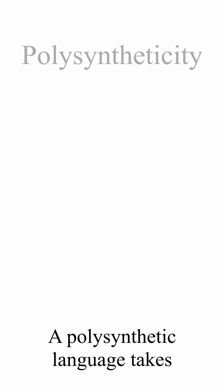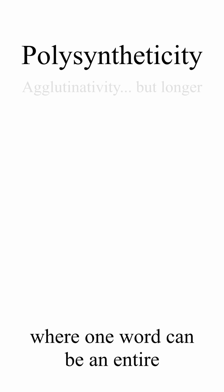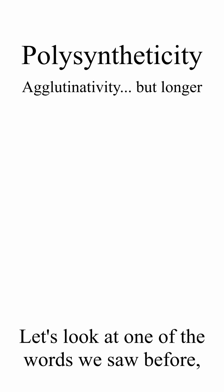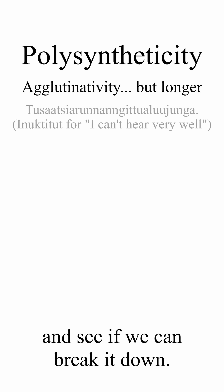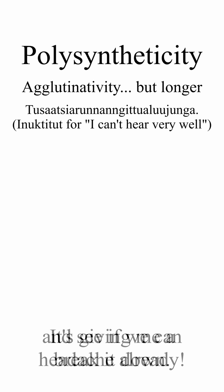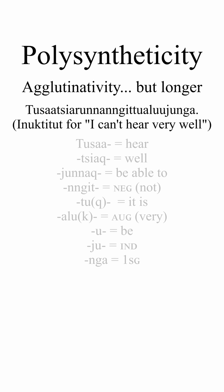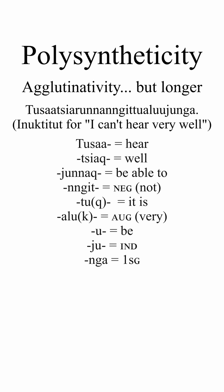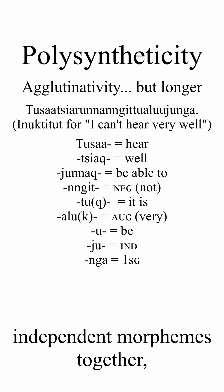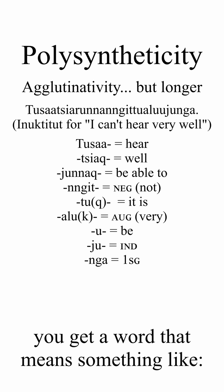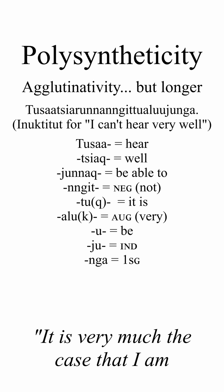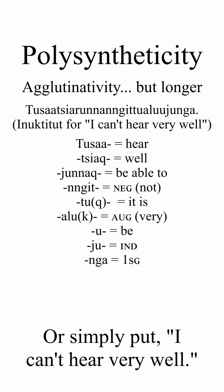A polysynthetic language takes agglutinativity to a whole new level, where one word can be an entire complete sentence if you want it to be. Let's look at one of the words we saw before and see if we can break it down. Let's separate this word into its morphemes. After stitching these independent morphemes together, you get a word that means something like 'it is very much the case that I am not able to hear well,' or simply put, 'I can't hear very well.'